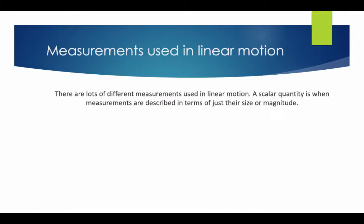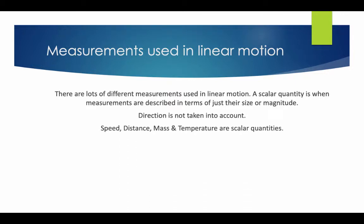There are lots of different measurements used in linear motion. A scalar quantity is when measurements are described in terms of just their size or magnitude. Direction is not taken into account. Speed, distance, mass and temperature are scalar quantities.